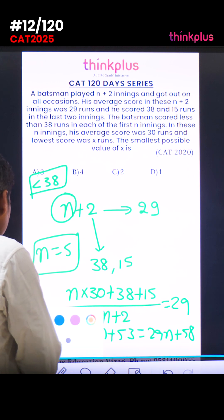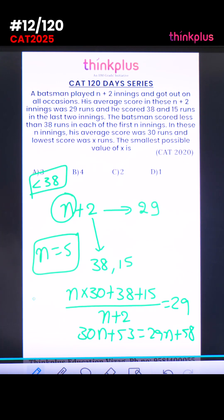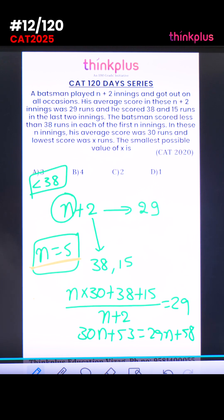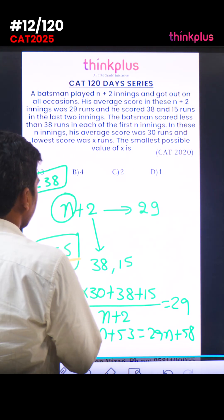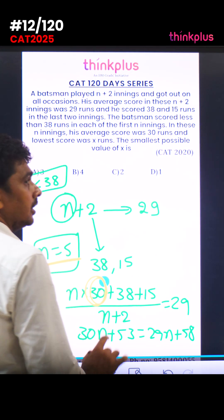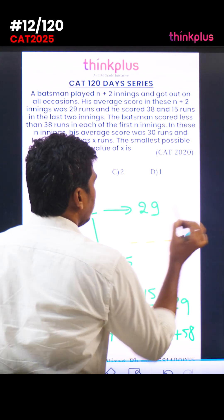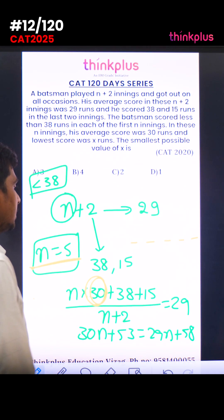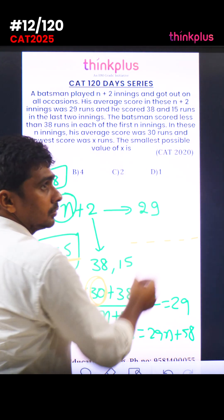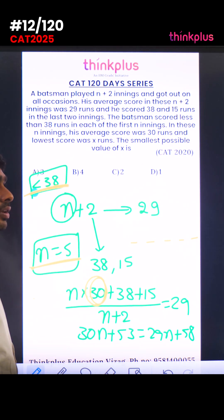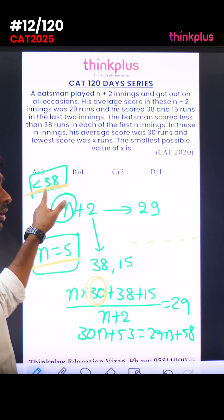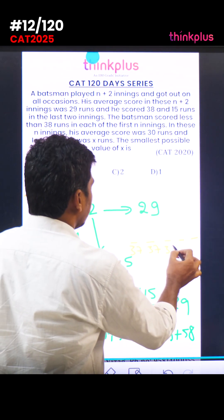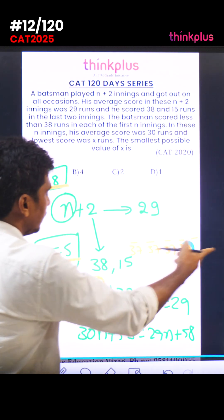Now, what is the final question? The lowest score was x runs — what is the smallest possible value? In these 5 innings the average score is 30, so total is 150. The maximum score allowed in each inning is less than 38, so the maximum is 37. If four innings score 37 each, that's 4 times 37 equals 148.